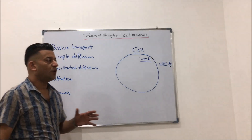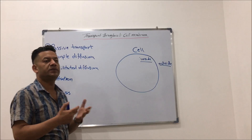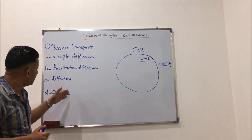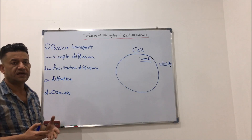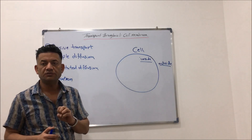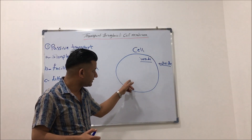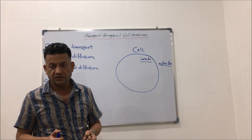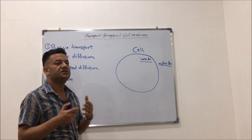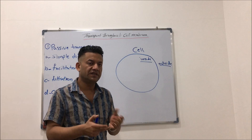Why is passive transport called passive? It is passive because throughout all these types of transport of molecules, substances, or ions, there is no direct consuming or expenditure of energy from the cell. Throughout the transport of substances by these mechanisms, there is no consuming of energy directly from the cell.